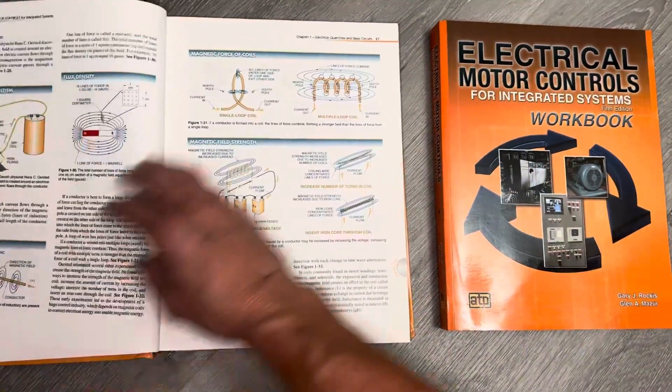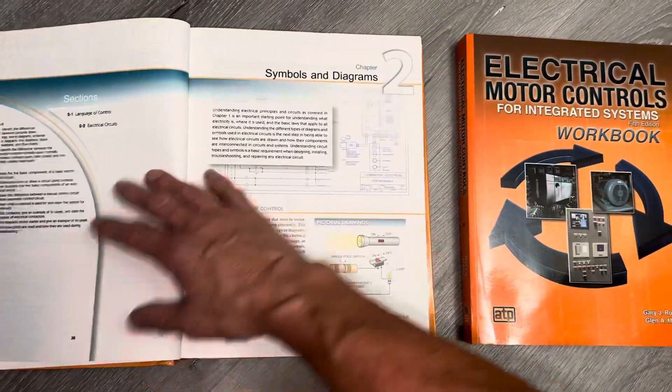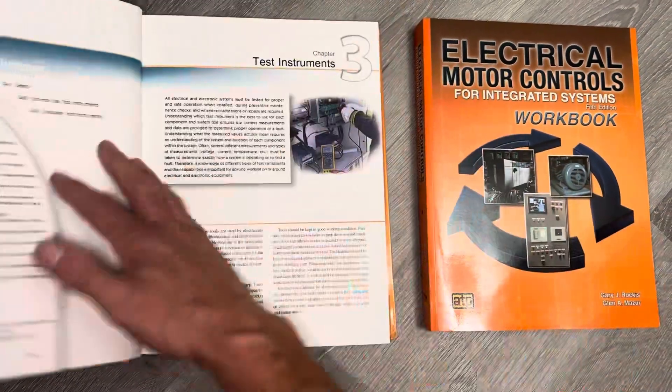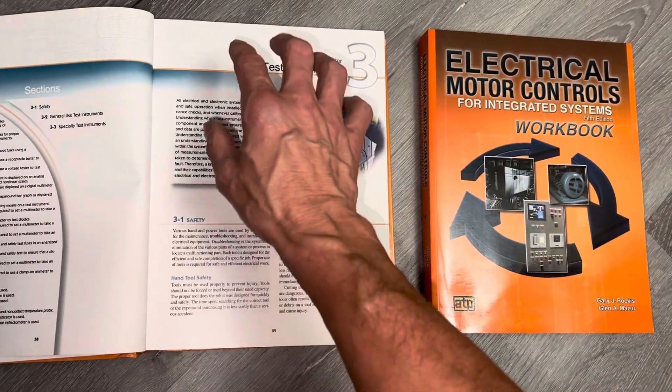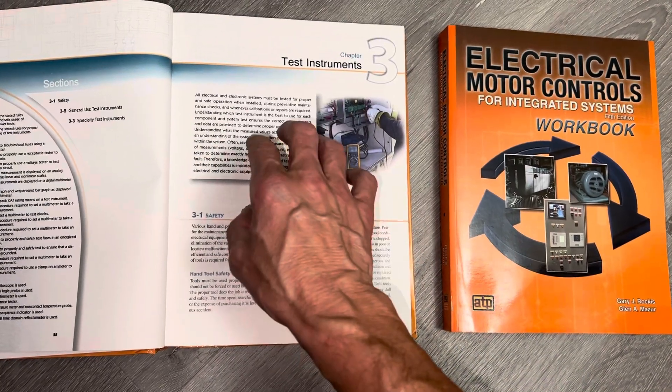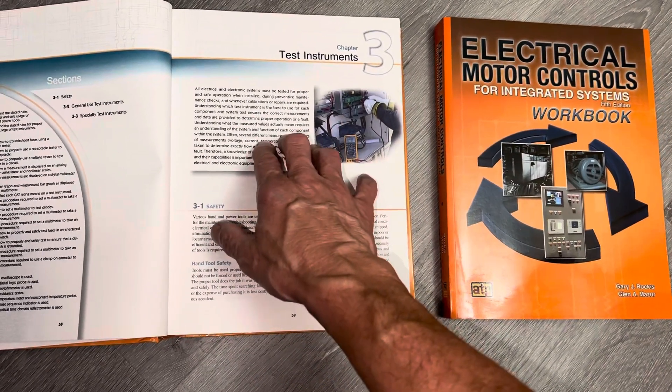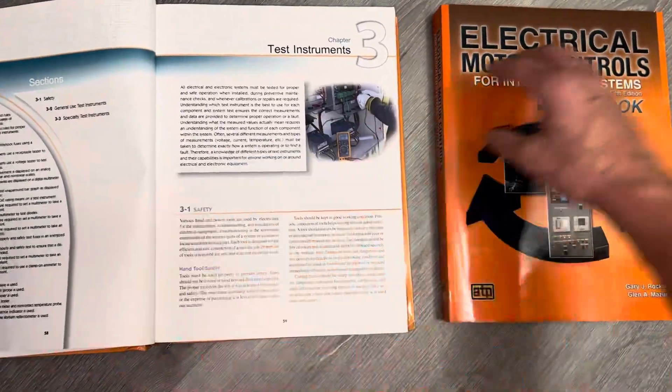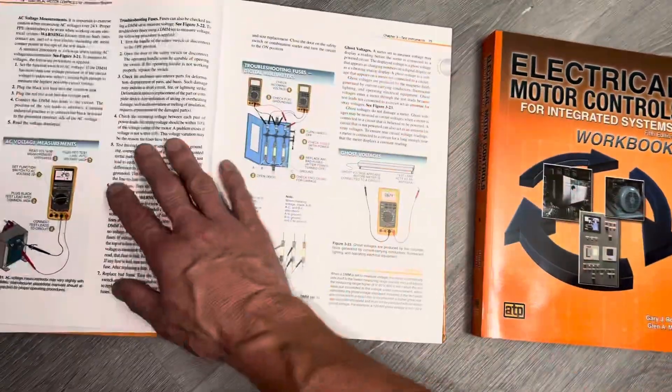And this is just one class out of many classes over the two and a half, or if you take all three programs: commercial refrigeration, residential heating and air conditioning, and building automation. This will be one of the books that you'll be getting.